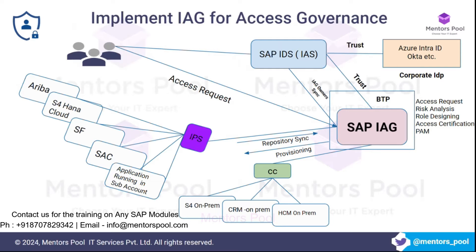Identity and Access Management talks about authentication, authorization, and identity lifecycle management. We have a tool for that — Cloud Identity Services on BTP — which includes SAP IAS and SAP IPS. For authorization, SAP BTP itself has a service called Authorization and Trust Management Service. That all falls under Identity Access Management.